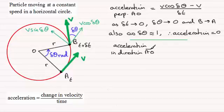And if we do that the change in velocity here is going to be the final velocity which is V sine delta theta. So you've got V sine delta theta minus the initial velocity in that direction. Well there was no velocity in that direction. So that's going to be minus zero. And then that's divided by the time taken which is delta t.